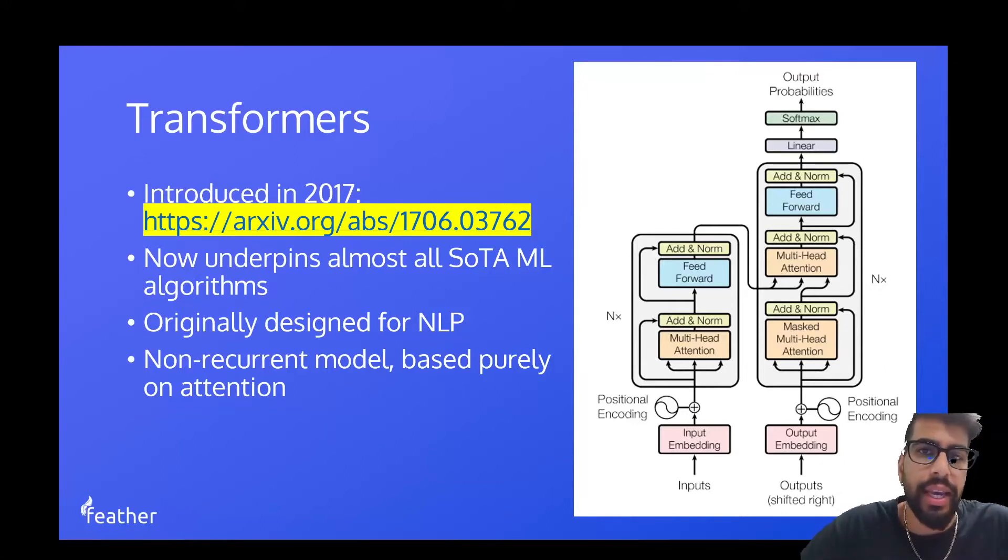Well, they were released in 2017 by Ashish Vaswani and other authors who were at Google at the time. Now, it was originally designed for NLP, more specifically translation, however its power was very quickly recognized, and now the transformer underpins most state-of-the-art machine learning algorithms in both NLP,